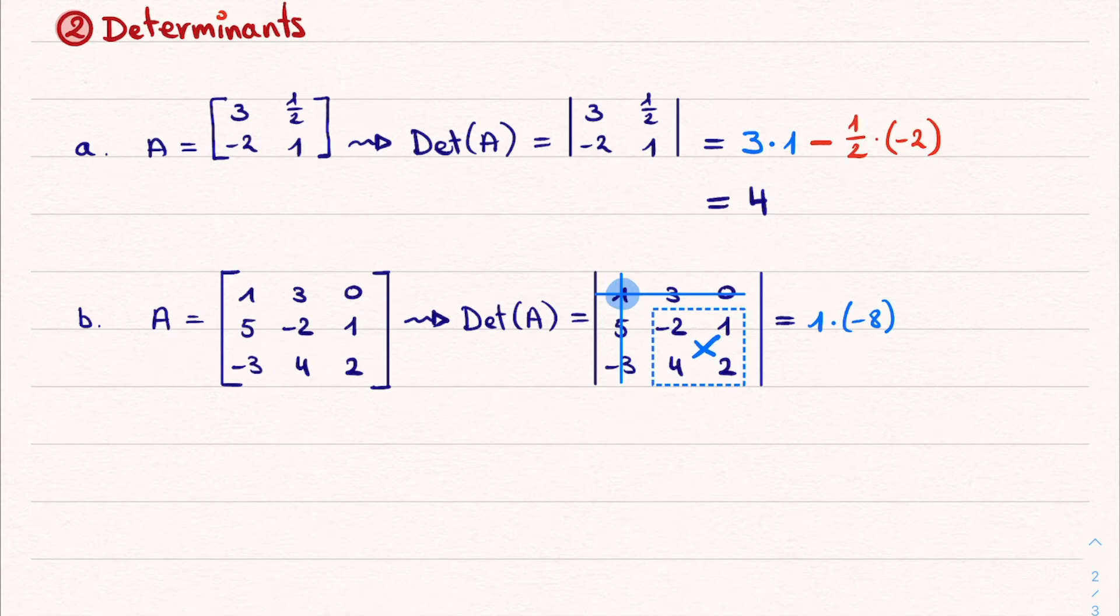In this case, it's the determinant of a 2 by 2 matrix, which we now know can be easily calculated with the product of the diagonal minus the product of the off-diagonal. Thus, we get 1 times minus 8. Then we move to the second element, for which we already put a minus sign in front, so we don't forget to put it there later on.